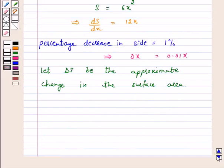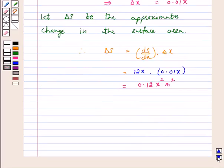Therefore, delta S is equal to ds by dx into delta x. Now, ds by dx is 12x. So this is equal to 12x into 0.01x. So this is equal to 0.12x square meter square.